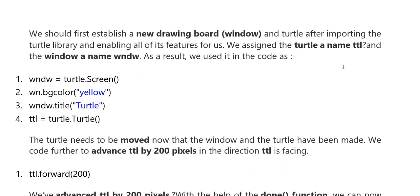We import the Turtle. Here, first of all, we establish a new drawing board window and Turtle after importing the Turtle library and enable all the features. We assign a turtle a name. Here, Turtle object, and Window a name window. So you can represent the turtle. Results show we use the code below.